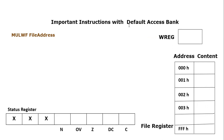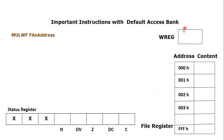Today's instruction is MULWF — Multiply Working with File. The function of this instruction is to multiply the working register value with a file register. The file register is a large register with multiple locations, and every location can store eight bits of information.